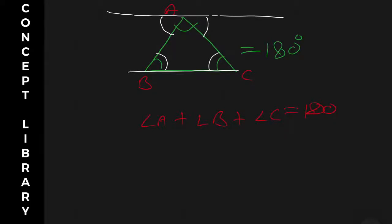...and a transversal line like this, then corresponding angles are equal. So with this concept, this angle equals this angle, and this angle equals this angle.